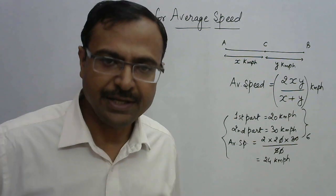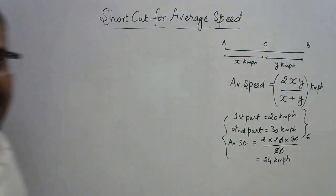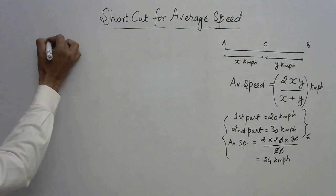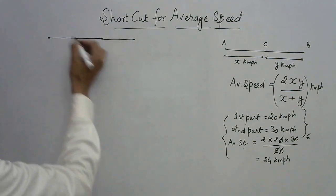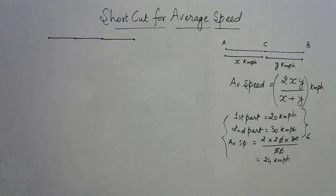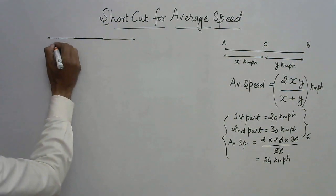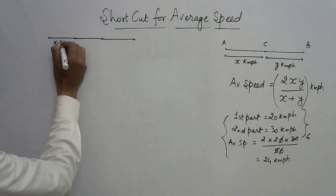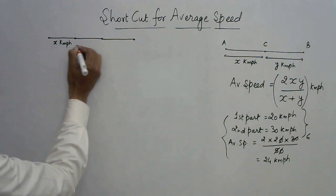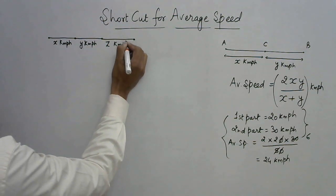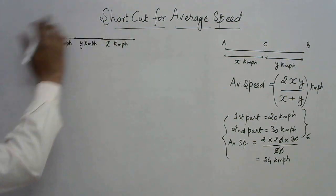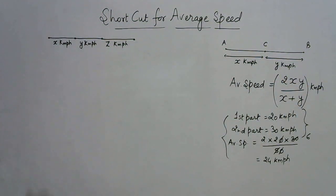Now let's talk of three equal distances. Suppose you have the first distance, the second distance, and the third distance — all three are equal — and these three distances are covered with unequal speeds: the first distance at x kmph, the second at y kmph, and the third at z kmph. I need to derive a relationship, just like the two-distance formula, to find the average speed.